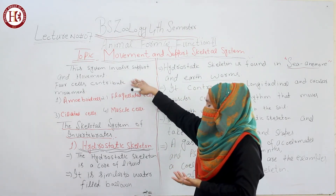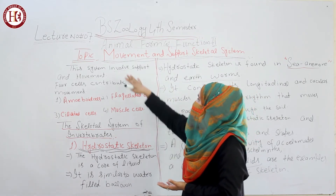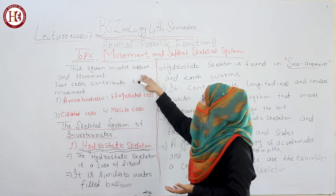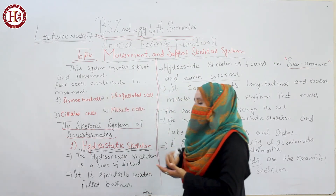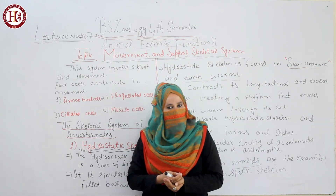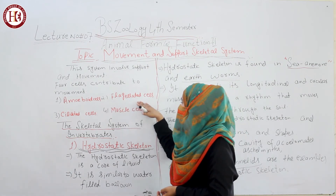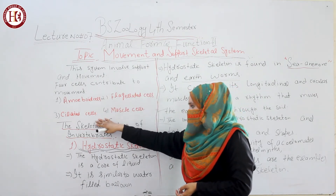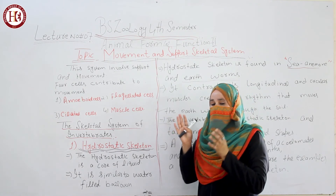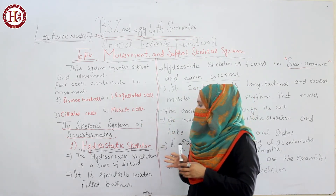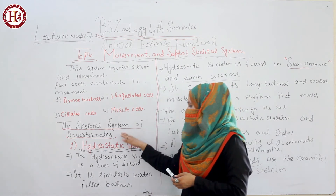To recap: this mechanism involves two main functions — support and movement. Four cells are involved and contribute to the mechanism of movement: amoeboid cells, flagellated cells, ciliated cells, and muscle cells. Our main topic is a detailed note on the skeletal system of invertebrates.